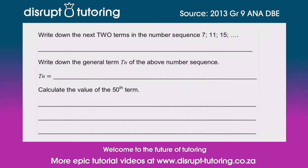That's always the first thing we check when there's a number pattern. The difference here: 11 minus 7 gives me 4, and 15 minus 11 also gives me 4. So we can see that we've got a common difference. That means the next number is going to be 4 bigger than the previous number. So 15 plus 4 gives me 19, and then my very next number is 19 plus 4, which is 23. And that'll get you your mark for that question.